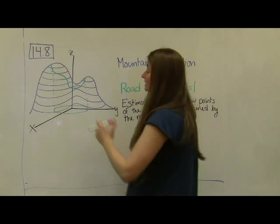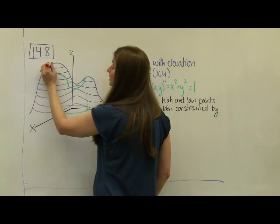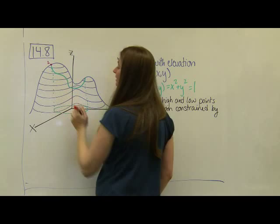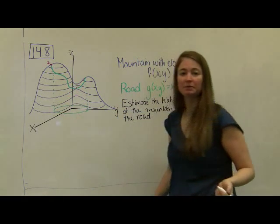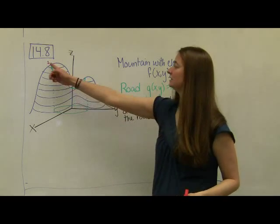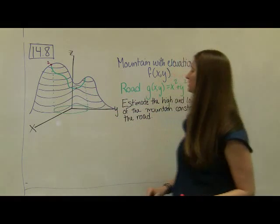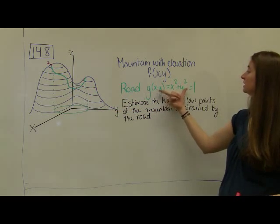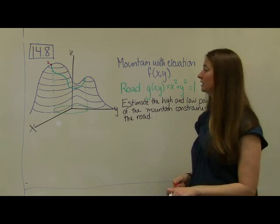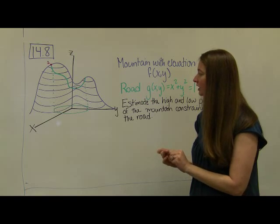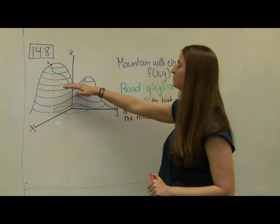Visually, it makes sense that the high point is probably somewhere up here, and the low point is probably somewhere down here. You can estimate that just by looking at the graph, right? Because this is where the road is up high, this is where the road is down low. Really, this is a composition of this road into this mountain function.